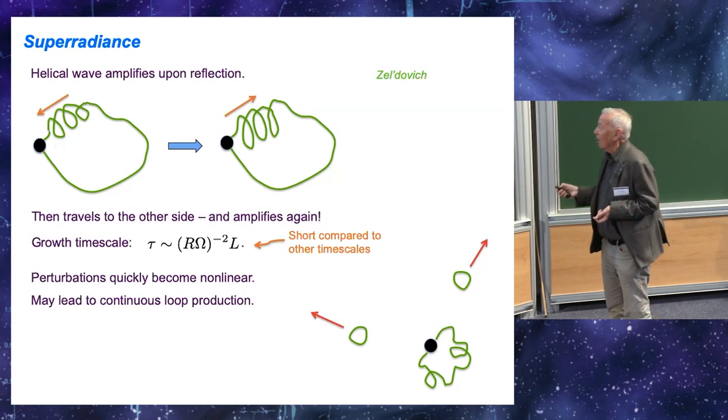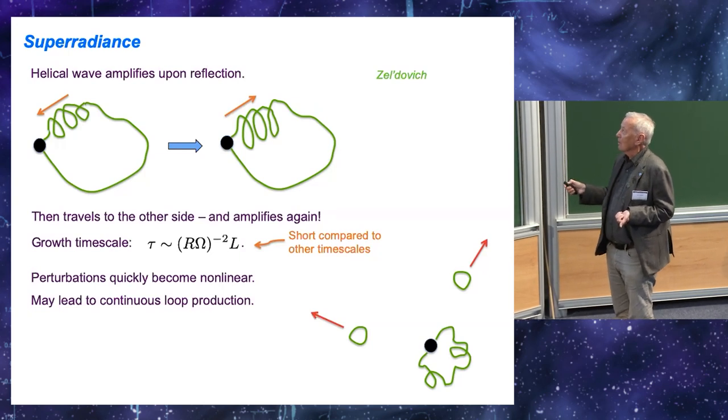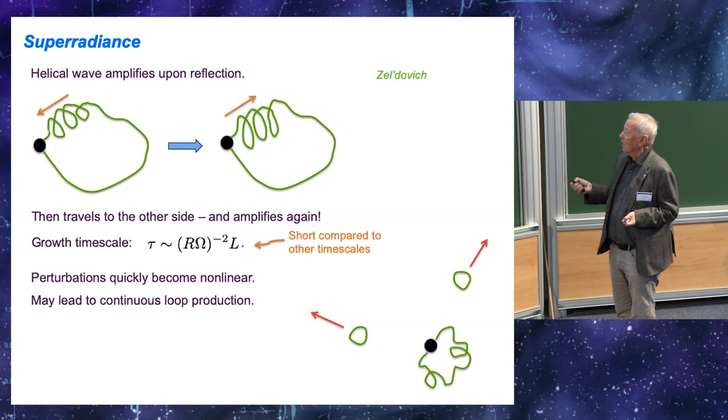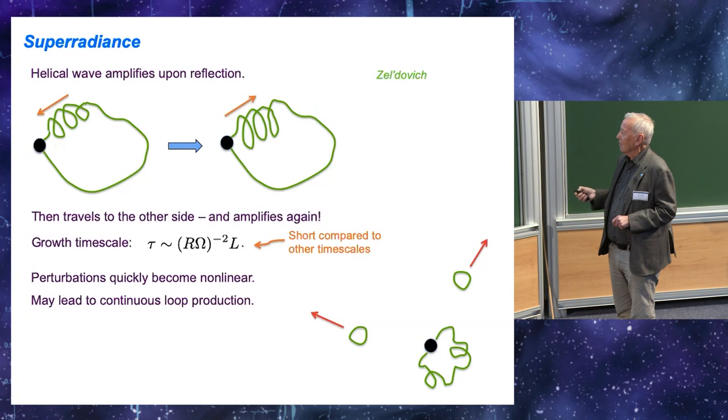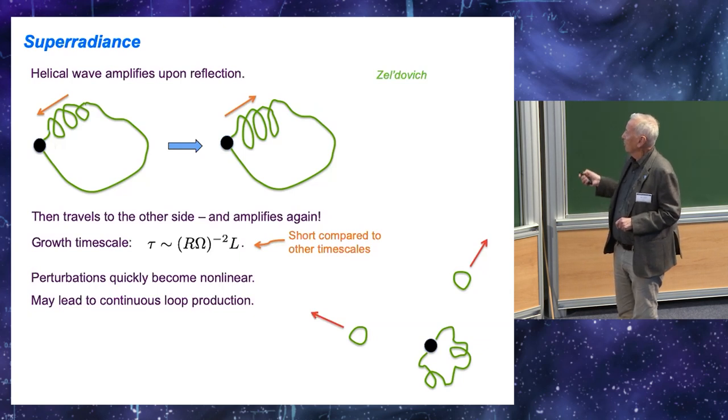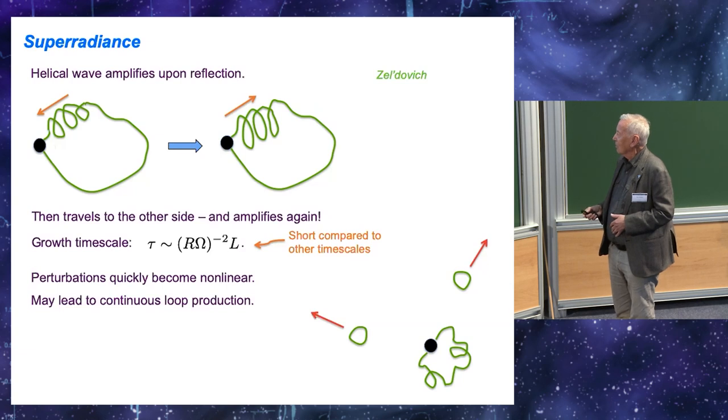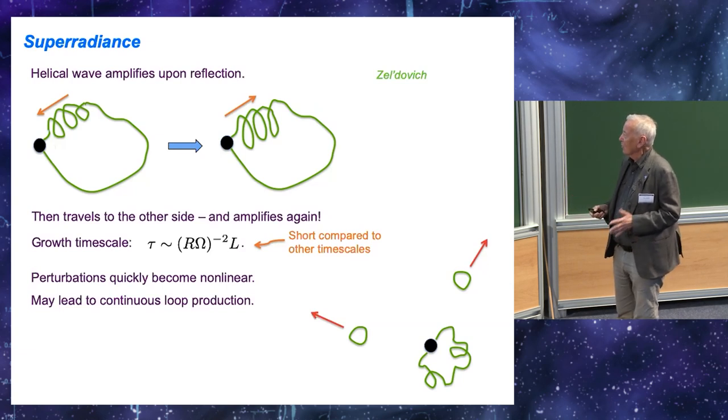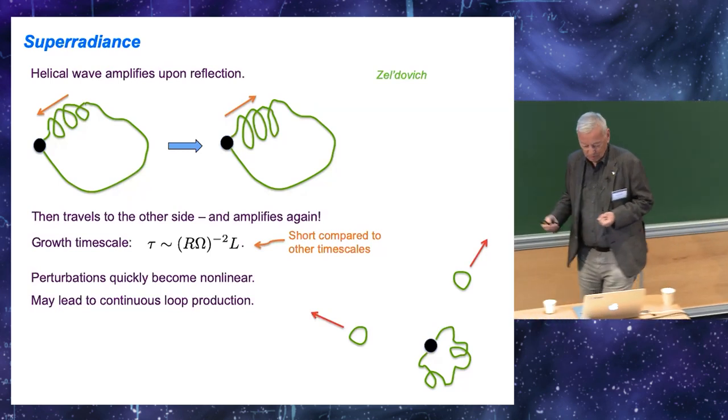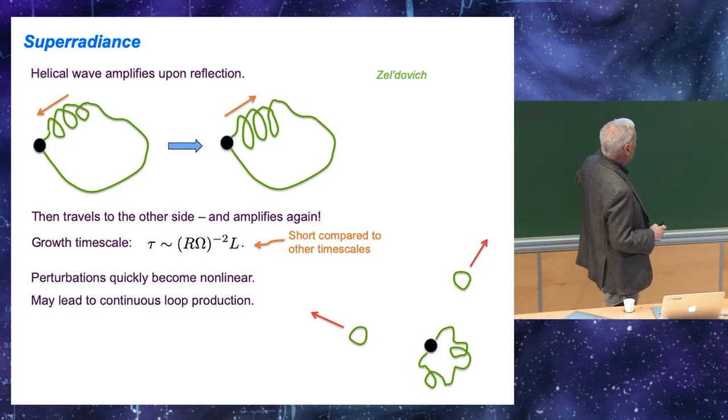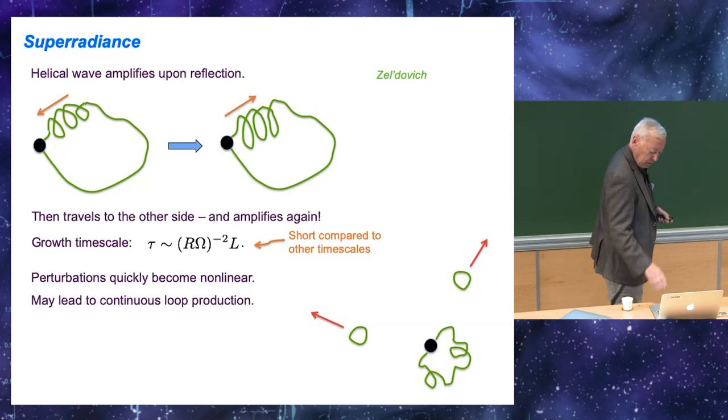One can imagine a scenario where this super radiance kind effect extracts rotational energy from the black hole. Then, this wave becomes non-linear. Once it becomes non-linear, it's easily imagined that self-intersections will result in loop formation. And, so, the loops will be produced, will fly away. And, so, this loop attached to the black hole can become a loop factory, kind of. By turning the rotational energy of the black hole into a number of closed loops.